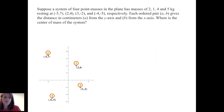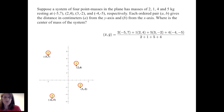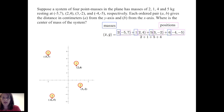If I have point masses in a Cartesian plane, I proceed in a similar manner. Suppose I have a system of four point masses with masses of 2, 1, 4, and 5 kilograms resting at the points (−5, 7), (2, 4), (3, −2), and (−4, −5) respectively. Each ordered pair (a, b) gives a distance in centimeters — a units from the y-axis and b units from the x-axis. The center of mass is found by taking each mass times its position, summing those, then dividing by the total mass of the system.